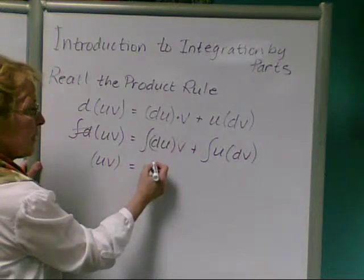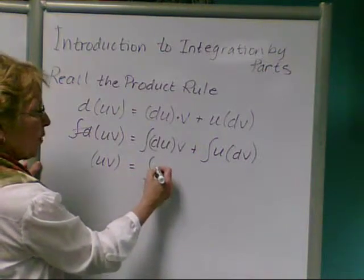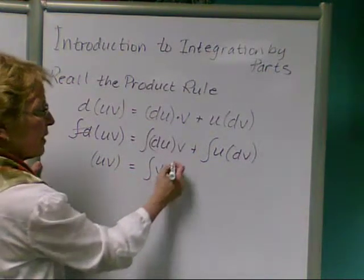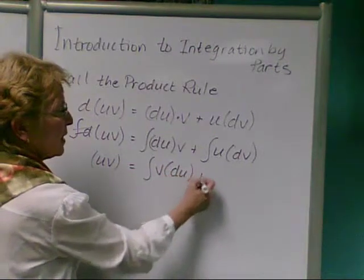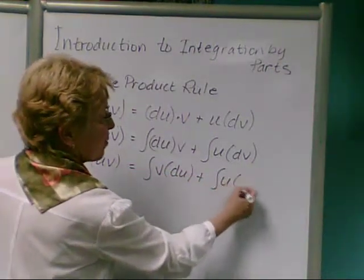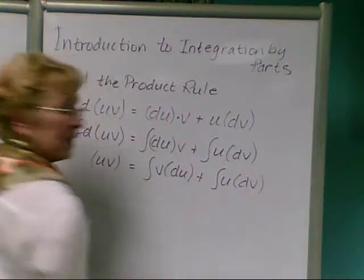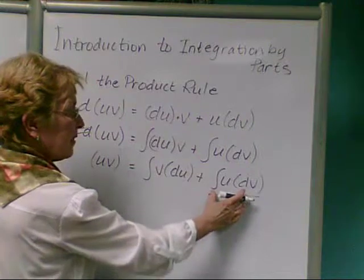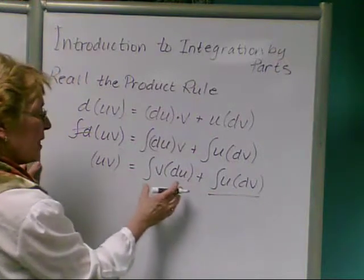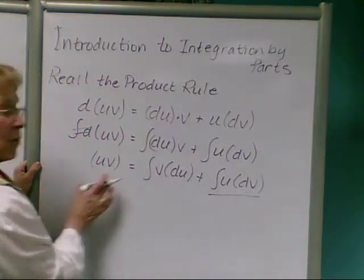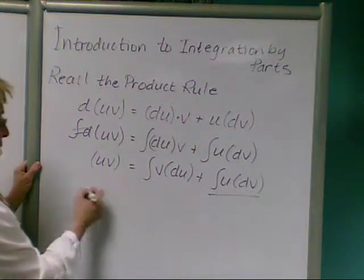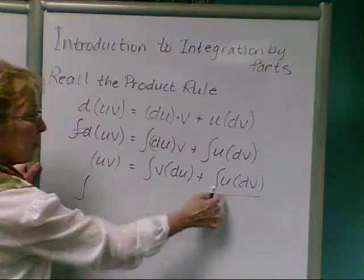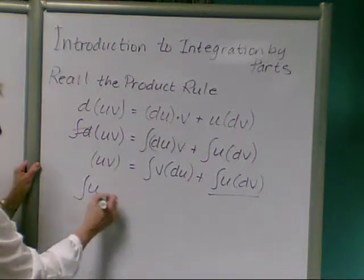So going on over here, let's just do a little bit of rearrangement. Put the v in front, the du second, and just copy this one as it is. And then let's solve for this one. Let's leave it here and subtract this piece from both sides. So we're isolating this particular term or integral.